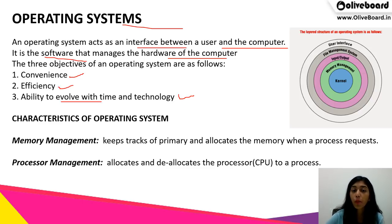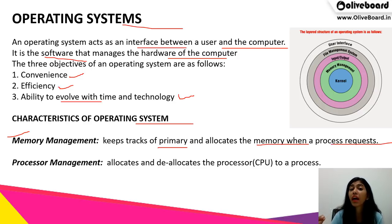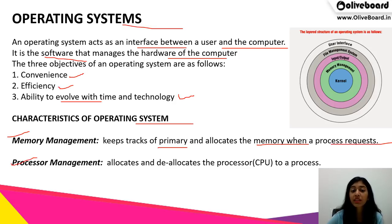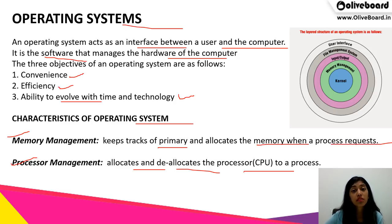The characteristics of operating systems are: first, memory management — it tracks the primary memory and allocates memory when a process requests it. Second, processor management — it allocates and deallocates the processor (CPU) to processes. Whenever something needs to be done by the CPU, the operating system ensures the information is provided to the CPU to carry out the instruction given by the user.